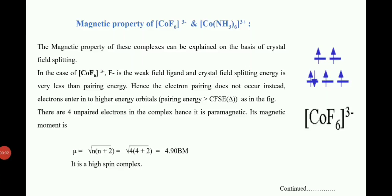Let us discuss the magnetic properties of the following complexes. In both complexes, cobalt is the metal but we have two different ligands: one is fluorine and the other is amine. Fluorine is a weak field ligand, whereas amine is a strong field ligand.